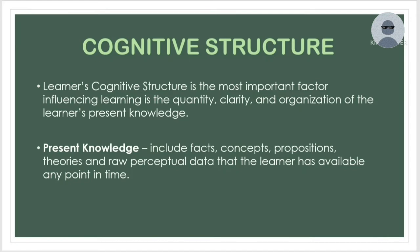This present knowledge consists of facts, concepts, propositions, theories, and raw perceptual data that the learner has available at any point in time. Cognitive structure provides meaning and organization to experiences and guides both the processing of new information and the retrieval of stored information. In other words, it refers to the knowledge we already know, the knowledge we acquire, and even knowledge we are not noticing or aware of.